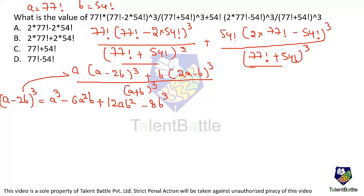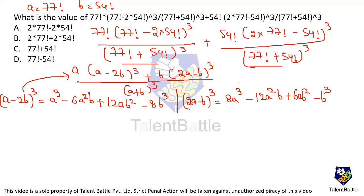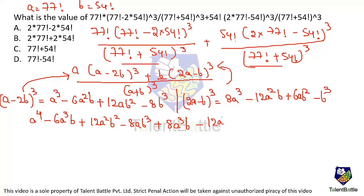We also expand (2a − b)³ using the same formula: 8a³ − 12a²b + 6ab² − b³. Now multiplying a × (a − 2b)³ gives: a⁴ − 6a³b + 12a²b² − 8ab³. And multiplying b × (2a − b)³ gives: 8a³b − 12a²b² + 6ab³ − b⁴. Adding these together gives the full numerator.